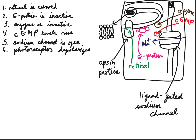Because the channel is open, there is both an electrical gradient and a concentration gradient for sodium towards the inside of the cell. That means sodium will flow in and depolarize the rod. Just like any other neuron, depolarization leads to an increased release of neurotransmitters. So in the dark, because the retinol is curved, the G protein is not activated, the enzyme is not activated, cyclic GMP levels rise, cyclic GMP binds to the channel and holds it open so that sodium can flow in and depolarize the photoreceptor, causing it to release neurotransmitter.